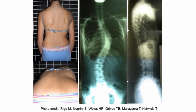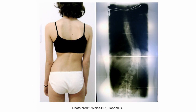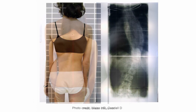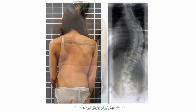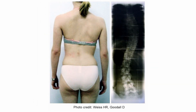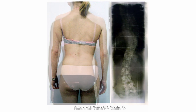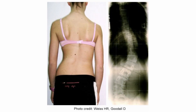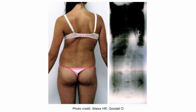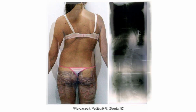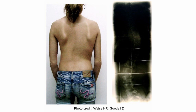Scoliotic curves are unique to every person, and they usually involve both lateral curvature and rotation. In this video, I'm going to keep it really simple and just talk about how chronic muscle contraction creates a lateral C-curve in the spine.